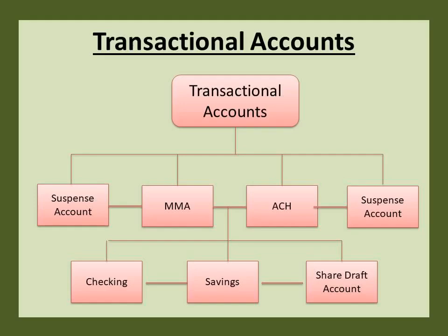Going ahead, let us understand which accounts at a bank are where transactions happen. They are: 1. Checking account or current account. 2. Money market account. 3. Savings account. 4. Demand deposit account or simply a DDA account, which can be any of the above three accounts. 5. Share draft account at credit unions. 6. Suspense account like an omnibus account. 7. ACH or automated clearing house. Any transactions happening in the bank have to pass through these accounts mandatorily.